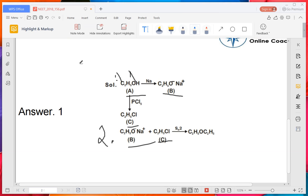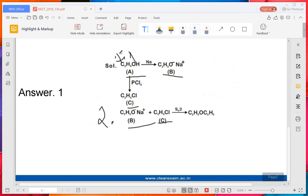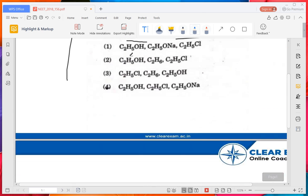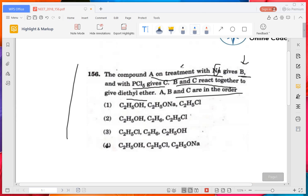In the first part, he is asking: a compound with reaction with Na gives B, and B with PCl5 gives C. So C2H5OH gives C. What he is asking is PCl5 gives C. If they can react together to form diethyl ether, this is your hint: diethyl ether.